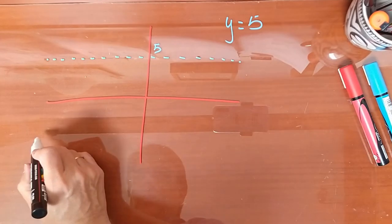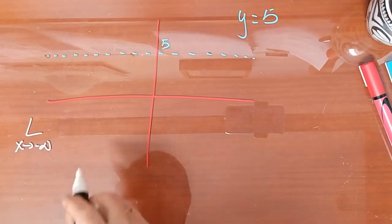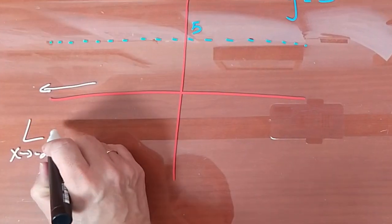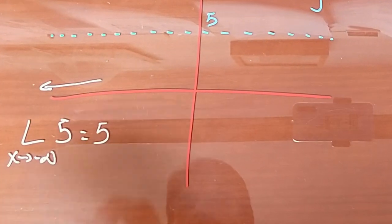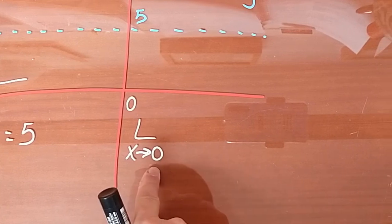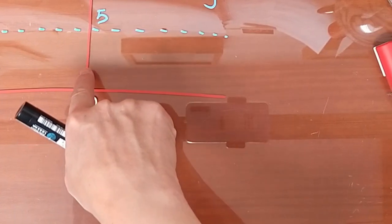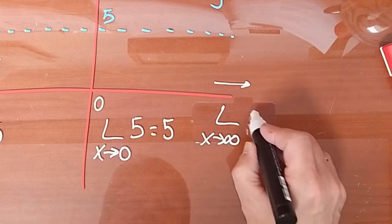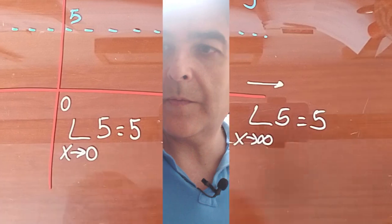¿Qué ocurre si hacemos el límite cuando x tiende a menos infinito? Si os fijáis, cuando nos vamos a menos infinito, la función siempre tiende a 5. Entonces, el límite cuando x tiende a menos infinito de 5 es 5. Si el límite cuando x tiende a 0 de la función 5, otra vez el resultado es 5. Y si nos vamos al límite en el infinito de la función 5, nos vamos también a 5. Como podéis comprobar, el límite, sea cual sea el valor hacia el que tiende x de una función constante, siempre es la propia constante. Sabiendo la gráfica, sabes hacer este tipo de límites.